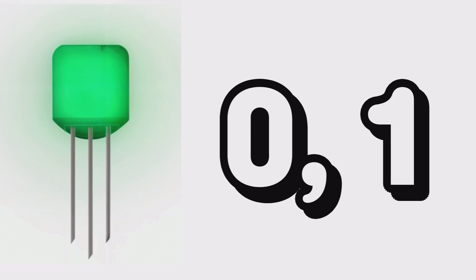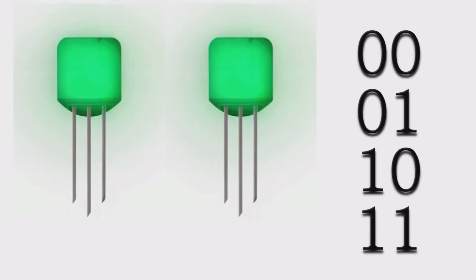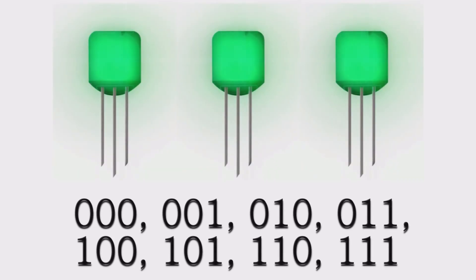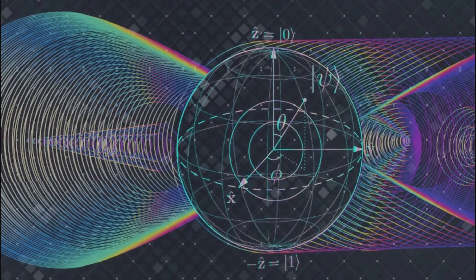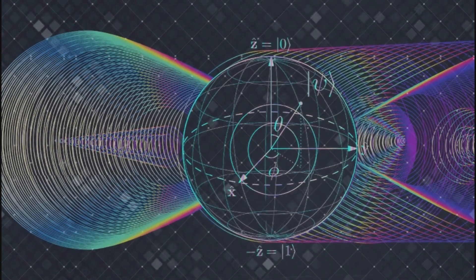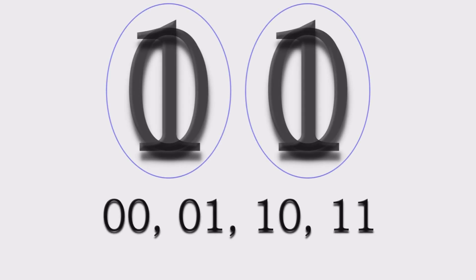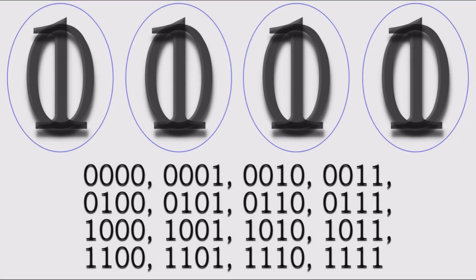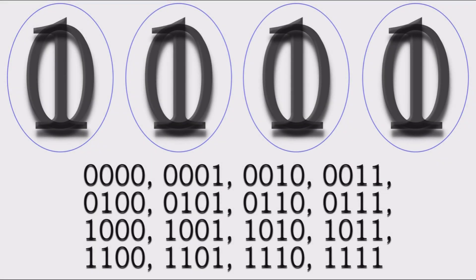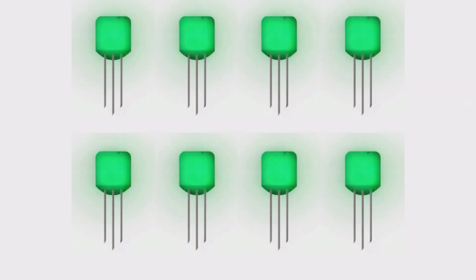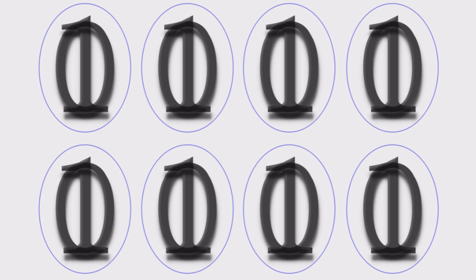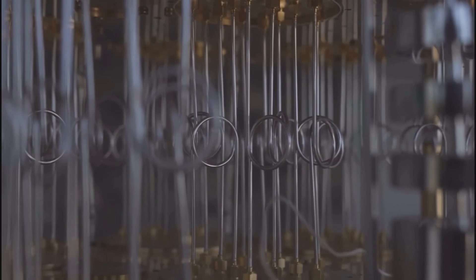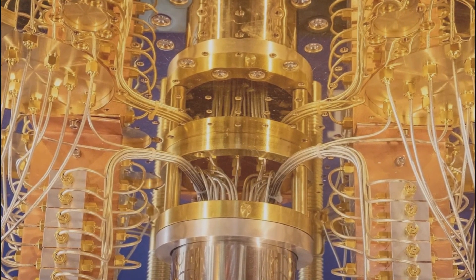예를 들어 일반 컴퓨터의 1비트는 0과 1 중 하나만 선택할 수 있고 2비트면 4개의 조합 중 하나, 3비트면 8개의 조합 중 하나를 선택해야 하지만 양자컴퓨터의 1큐비트는 0과 1의 값을 동시에 가질 수 있으며 큐비트의 수가 늘어날수록 처리 속도는 기하급수적으로 증가한다. 2큐비트는 4개의 상태를, 3큐비트는 8개의 상태를, 그리고 4큐비트는 16개의 상태를 동시에 계산할 수 있다. 이를 통해 일반 컴퓨터의 8비트가 256개의 조합 중 하나씩만 선택해 계산하는 방식과는 달리 8큐비트를 가진 양자컴퓨터는 256개의 가능성을 한 번에 계산할 수 있다. 이는 양자컴퓨터가 일반 컴퓨터보다 훨씬 복잡한 문제를 더 빠르게 해결할 수 있음을 의미한다.